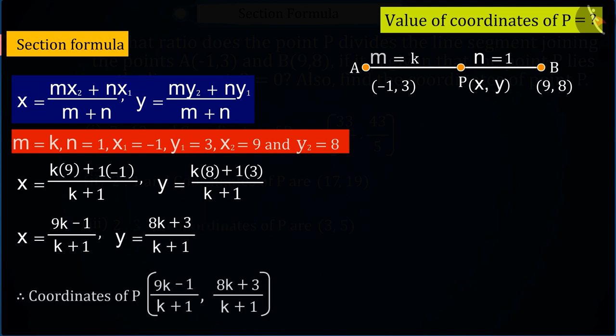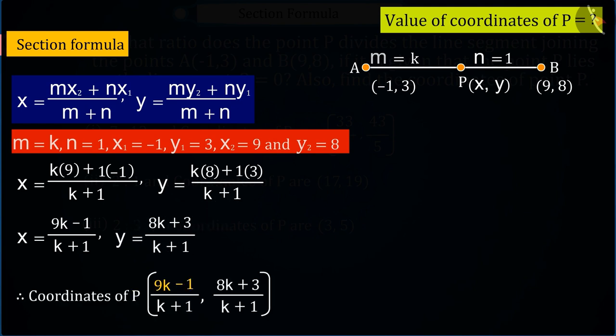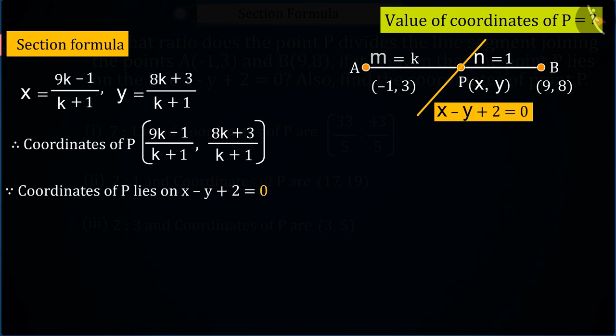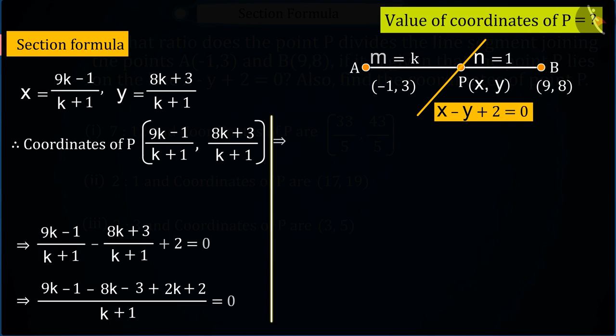Absolutely correct. Using section formula, the coordinates of P will be 9K minus 1 upon K plus 1 and 8K plus 3 upon K plus 1. Since the point P lies on the line X minus Y plus 2 equals 0, so by putting the values of X and Y in this equation, we get the value of K as 2 upon 3.